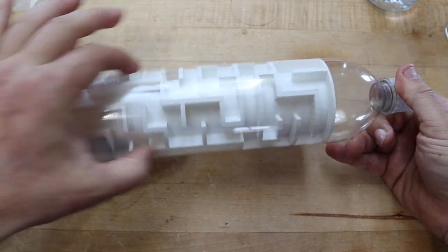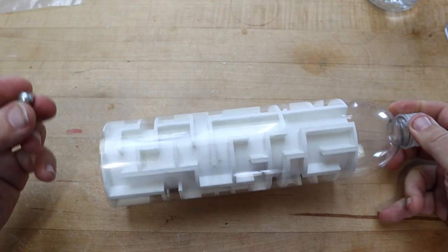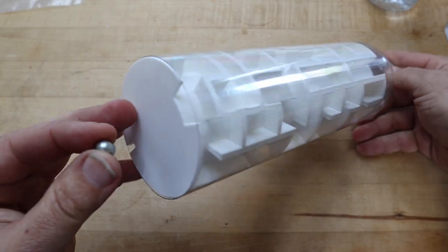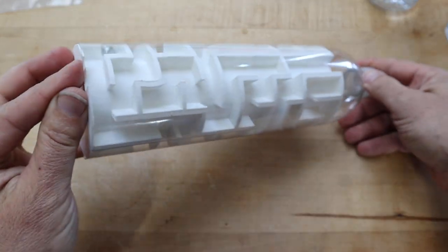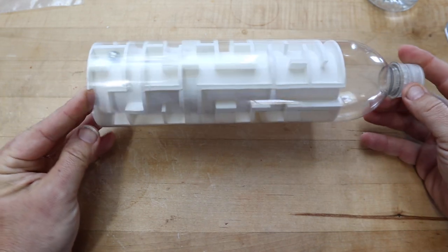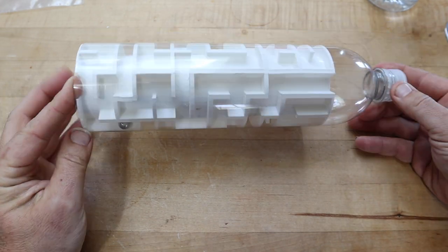And then when the 3D print was done, all I had to do was just slide it up inside here. So now I've got a ball bearing. There's a little spot on the bottom here I can put this in, and now I have to try to rotate this around.